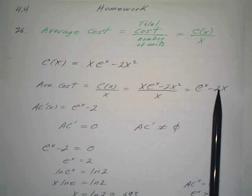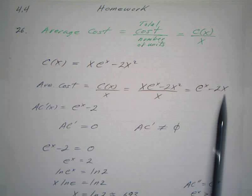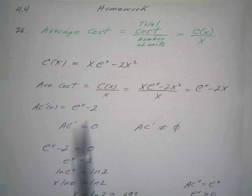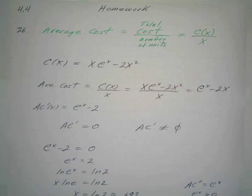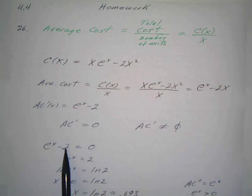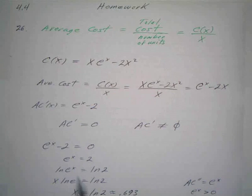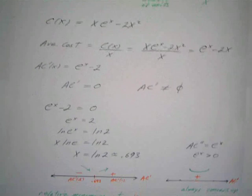So I set that equal to 0. It's not going to be undefined because e^x is always positive—it's always defined. So we've got e^x - 2 = 0, which gives us e^x = 2.